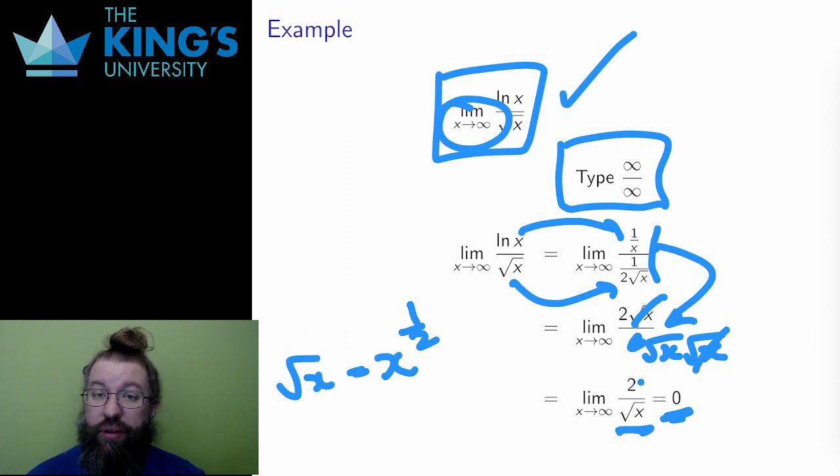However, other techniques such as L'Hôpital's rule are precisely the way that mathematicians figured out the asymptotic ranking of functions in the first place. How do I know that the logarithm grows slower than the square root? I just claimed this earlier.